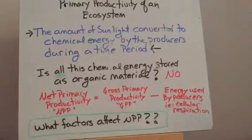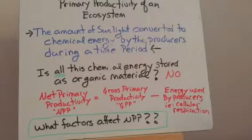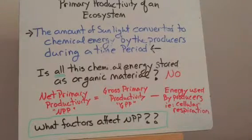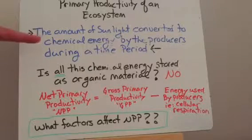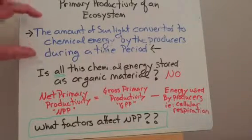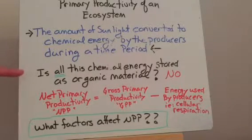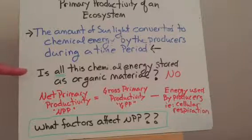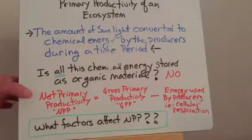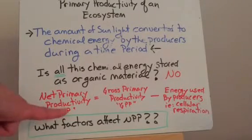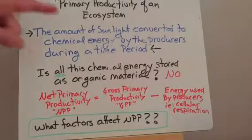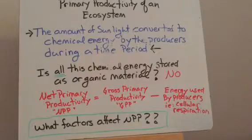So that gets us to this important concept of primary productivity of an ecosystem. So here's the definition of primary productivity. It's the amount of sunlight that's actually converted to chemical energy. So the amount of sunlight that gets captured and converted to chemical energy by the producers during a particular time period. So in the previous example, we had about one percent. That can vary, but that's the measure of primary productivity. So is that all of the chemical energy that's stored as organic material? Well, no, that's what we just saw before. So when we're doing the lab, we're going to be doing on primary productivity, you're going to be ultimately calculating the net primary productivity or NPP.